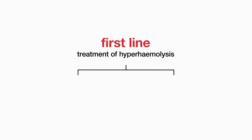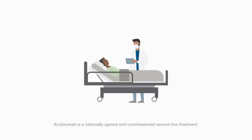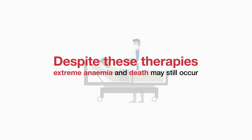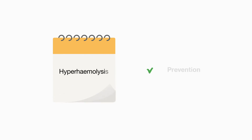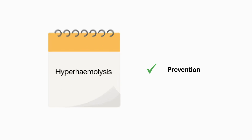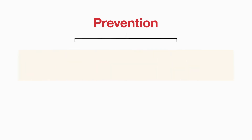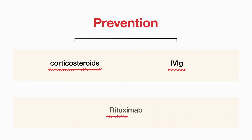First-line treatment of hyperhemolysis is corticosteroids and intravenous immunoglobulin. Various second-line treatments are emerging and supportive therapy is often required. Despite these therapies, extreme anaemia and death may still occur, therefore close monitoring of the patients and access to specialist support is essential. In patients with a history of hyperhemolysis, prevention may be more effective than treatment. First-line prevention is administration of corticosteroids and IVIG prior to transfusion, and in adults, rituximab may also be used, if necessary, as a second-line approach.